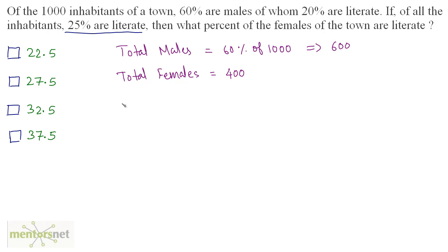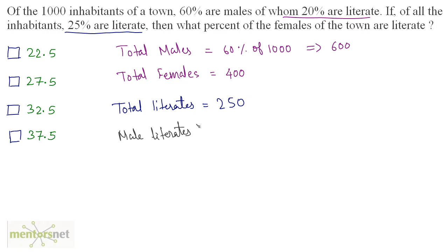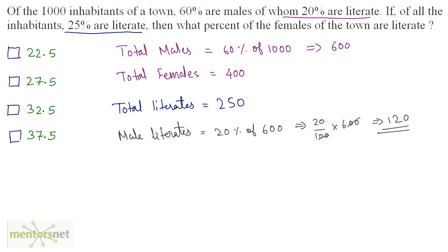It is also given that 25% of the population is literate. Total literates is equal to 25% of 1000, which gives 250 people. Now let us calculate how many males are literate. 20% of the male population is literate. Total male literates is equal to 20% of 600, so 20 upon 100 times 600, which equals 120. So 120 males are literate.